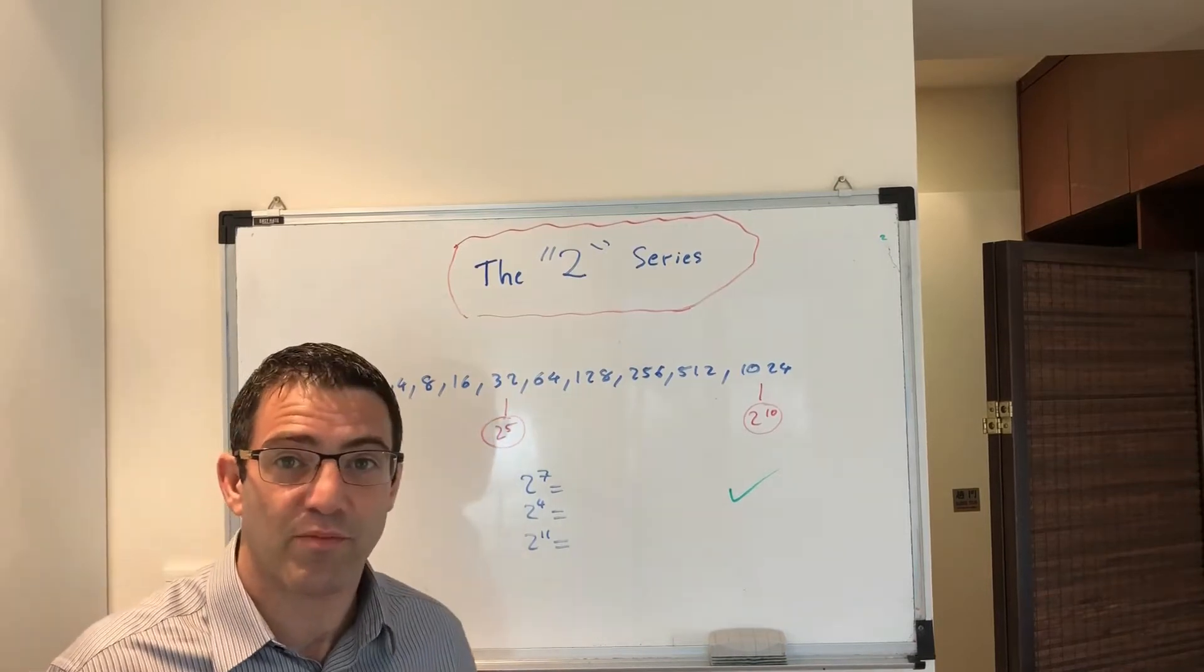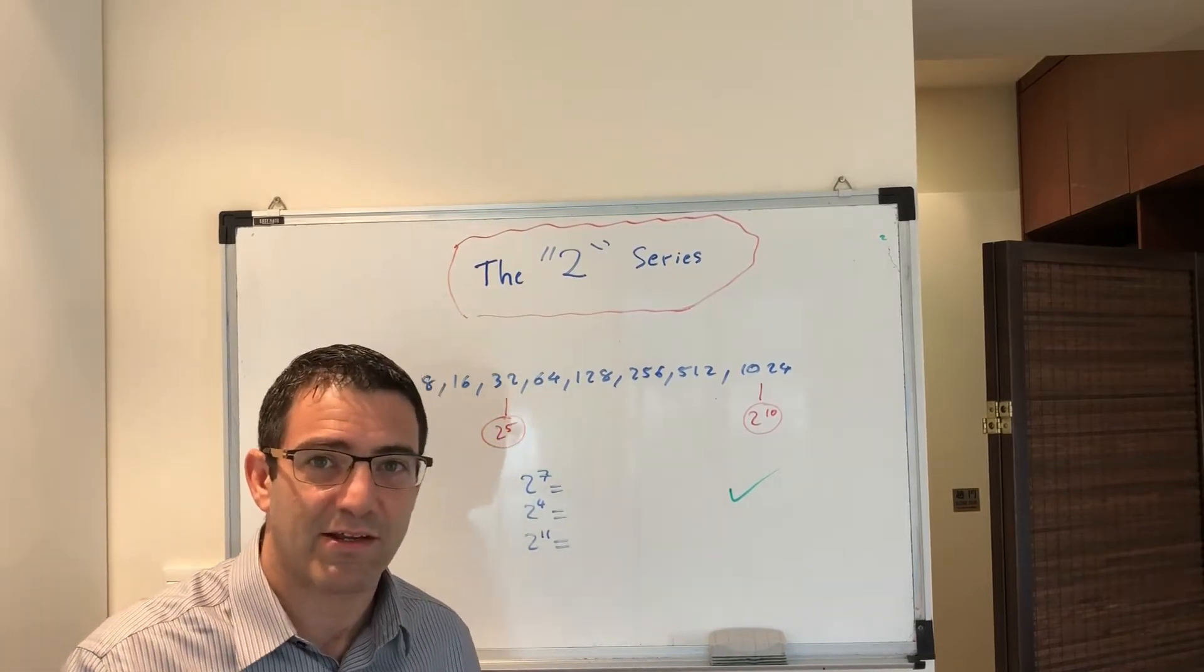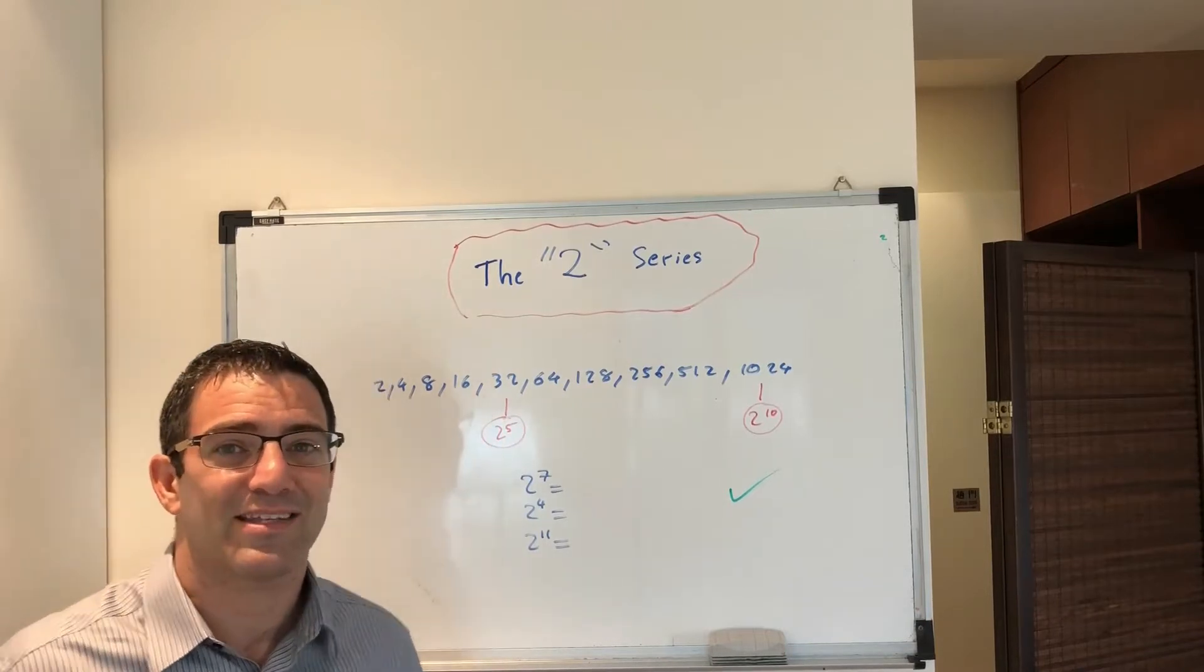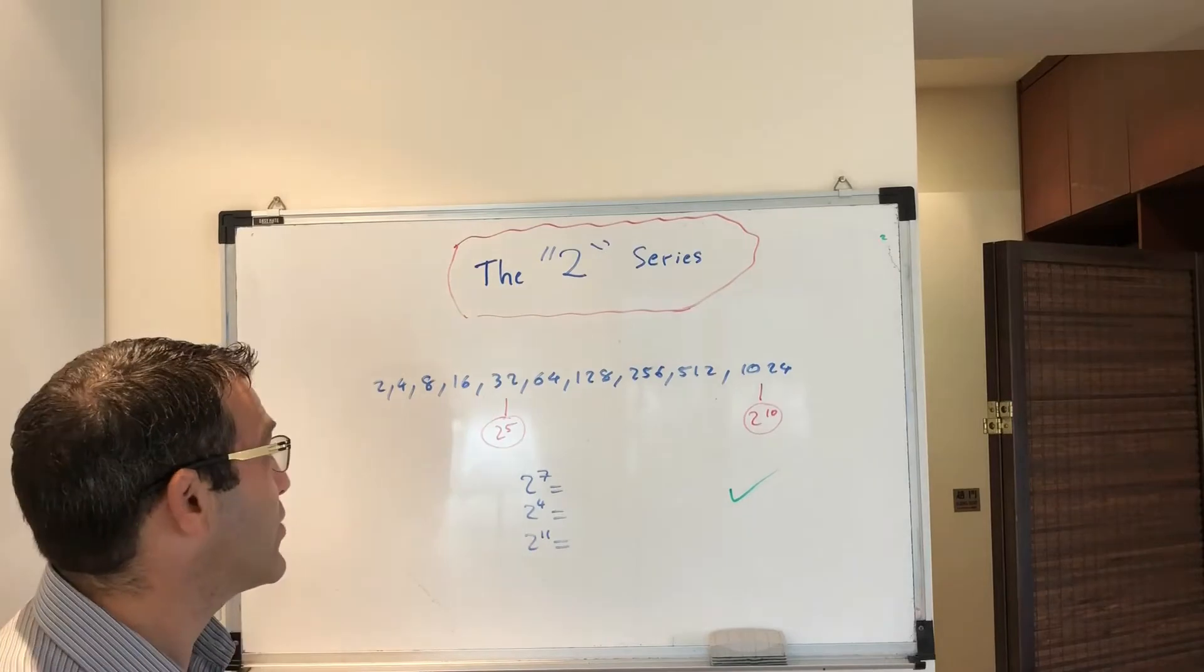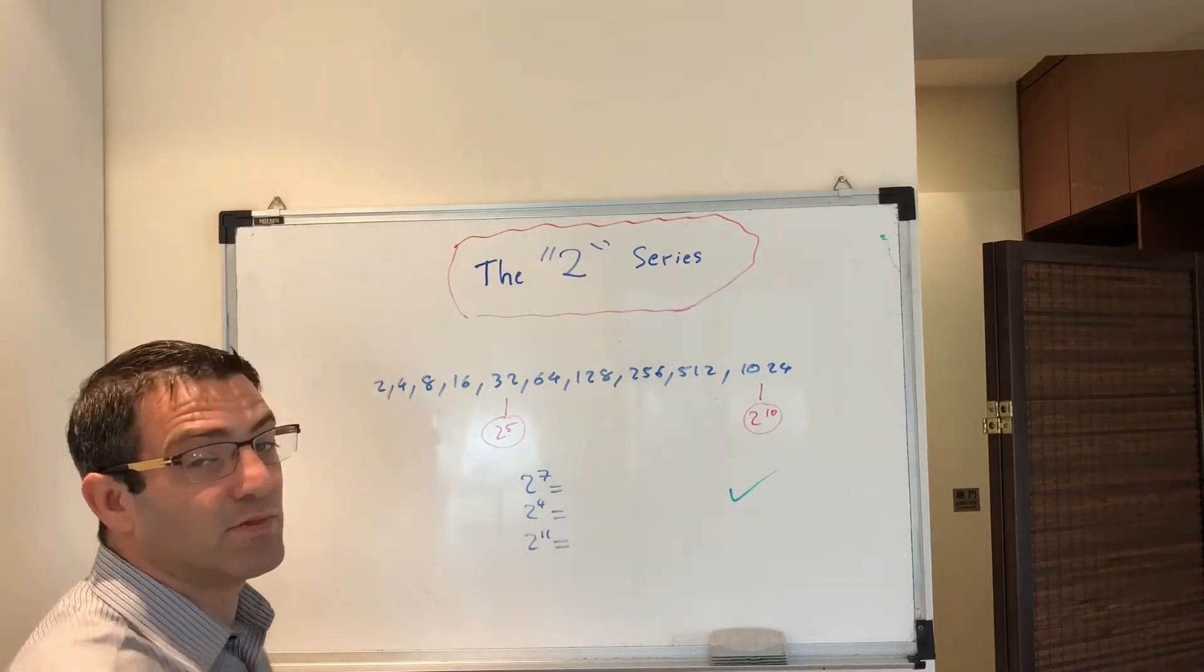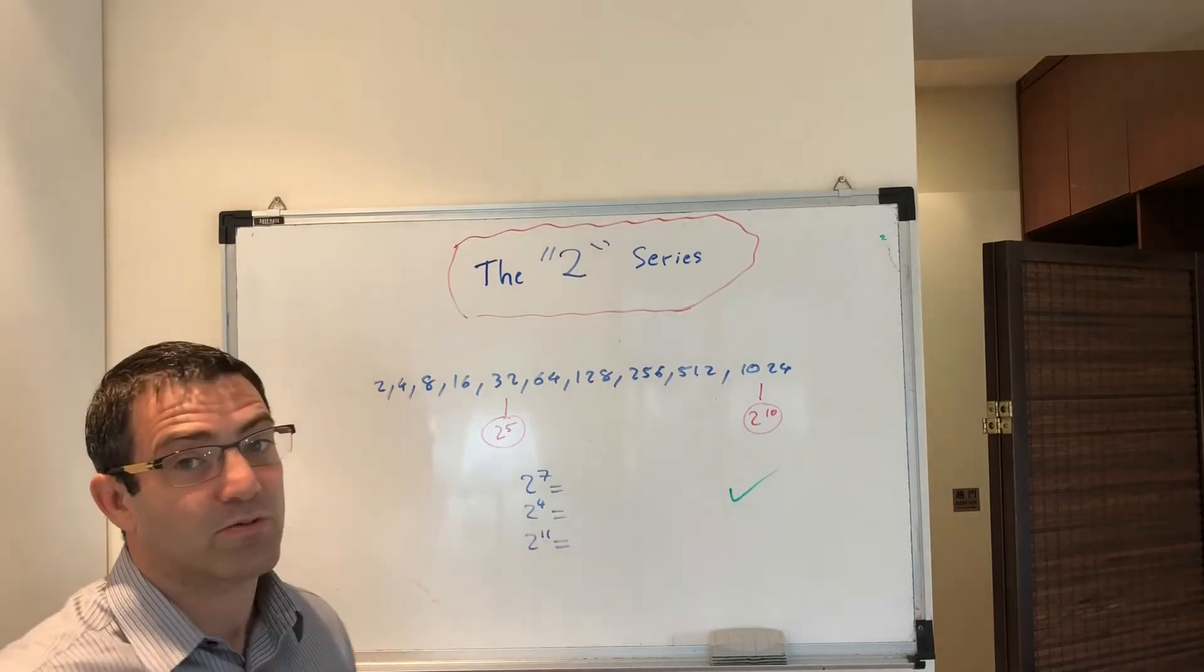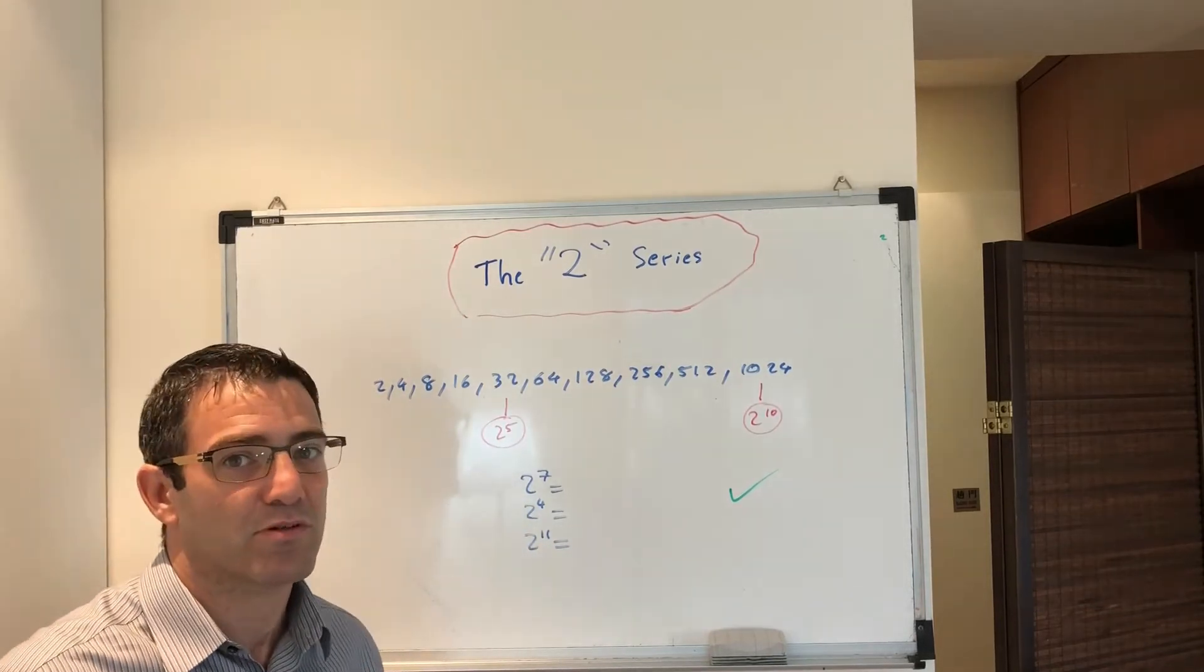So instead of not knowing them, why not acquire that skill and actually know your powers of 2? And it's not that hard. It's as simple as multiplying 2 by 2, really. What is 2 times 2? That's 4. What's 4 times 2? That's 8. What's 8 times 2? Well, that's 16. What's 16 times 2? That's 32.